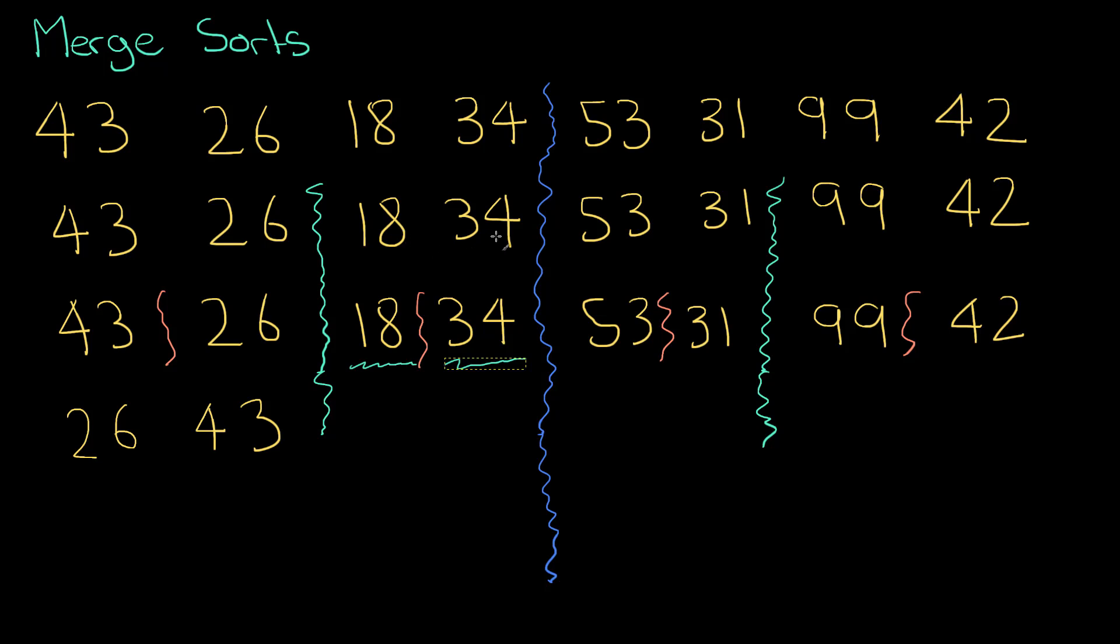So that comes next and then I'm going to go over to my next sub list here, my next list of two, 18 and 34. Which one's lower there? 18 then 34. And then on to my next list here which one's lower, 53, 31? 31 and 53. And you notice I'm doing this along the same lines that divided the lists into before so 42 and 99 now go like this because they were 99 and 42 earlier up.